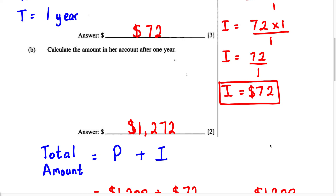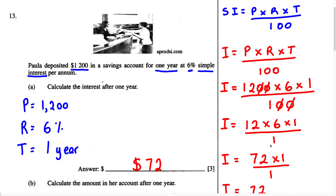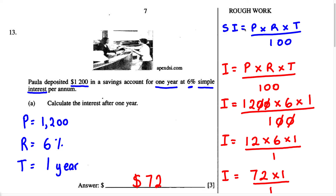Remember: anytime you're solving a simple interest problem, always use the formula — Simple Interest equals Principal times Rate times Time. Once you remember this formula, find the principal (the starting amount, either borrowed or deposited), then the rate as a percentage, then the time in years. Put it all over 100 and solve to find the interest.